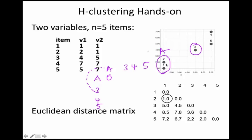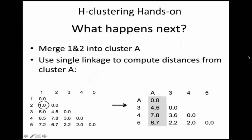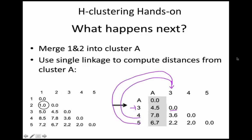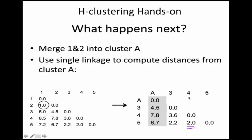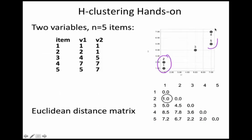To find the distance between Cluster A and item 3 using single linkage, we use the nearest neighbor: item 2 is closer to item 3 than item 1 is, so we use the distance between 2 and 3. This gives: distance between A and 3 = 4.5, A and 4 = 7.8, A and 5 = 6.7. Also, distance between 3 and 4 is 3.6, and between 3 and 5 is 2.2. The least value in this matrix is 2.0, which is the distance between items 4 and 5, so we group them as Cluster B.